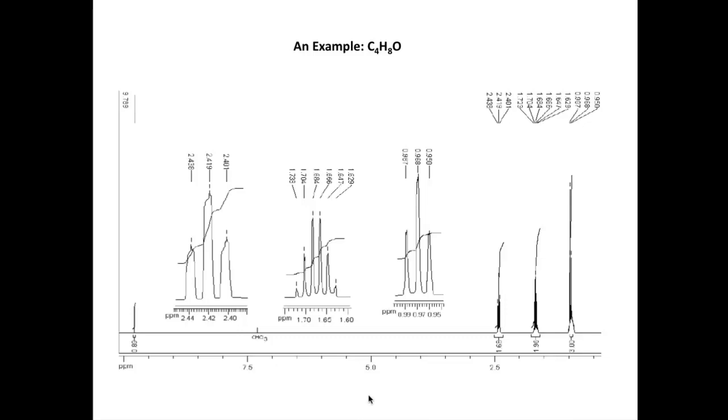And it's worth pointing out that this signal here, this very small signal, is due to chloroform, CHCl3. And it's a residual amount of the chloroform, which is present in the deuterated solvent, which is deuterated chloroform, CDCl3. So let's now look at applying our four steps to assigning this spectrum.